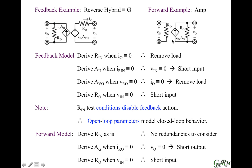This Norton model is essentially a short circuit model, because when we derive the transconductance gain, we short the output, and when we derive the output resistance, we short the input. So it's easy to remember.